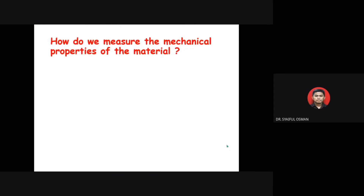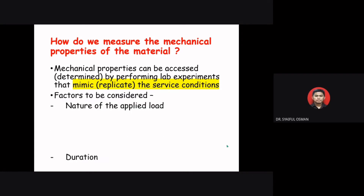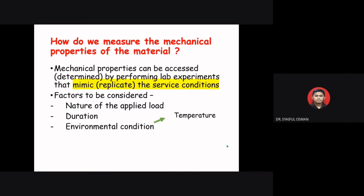Mechanical properties can be determined by performing lab experiments that mimic or replicate the service condition. Factors to consider include the nature of the applied loading, the duration, and environmental conditions such as temperature and humidity. Measuring and understanding the mechanical response is very important for material research, product development, and process control. The mechanical response depends on the application scenario as well as the material chemistry.